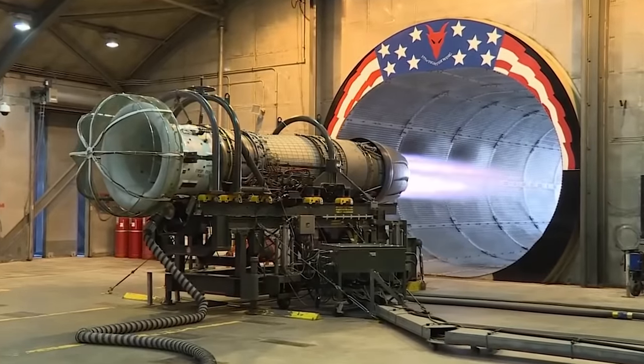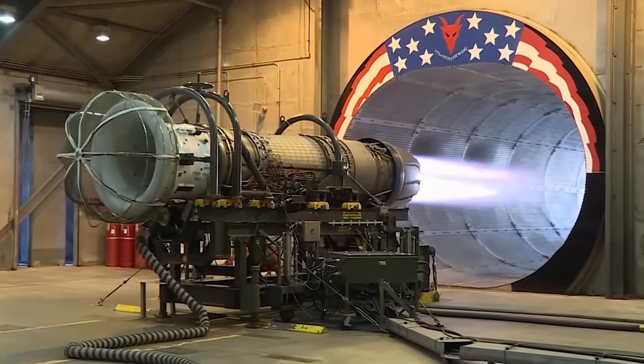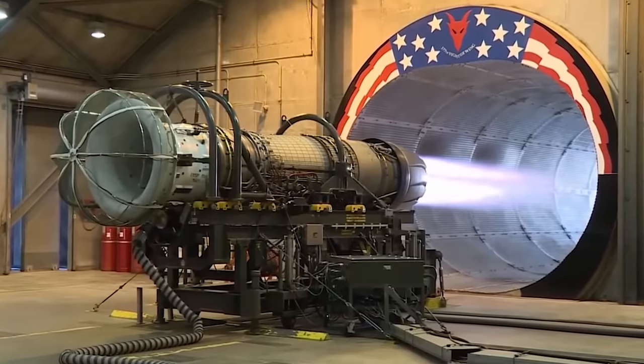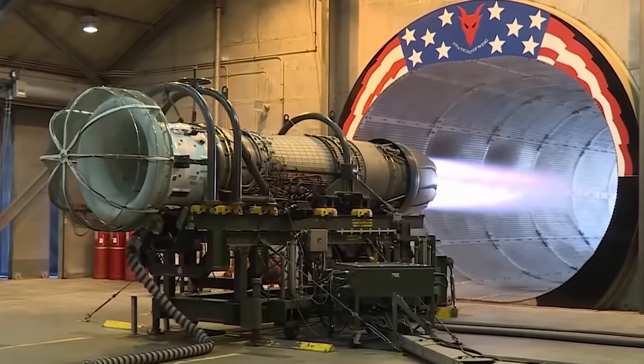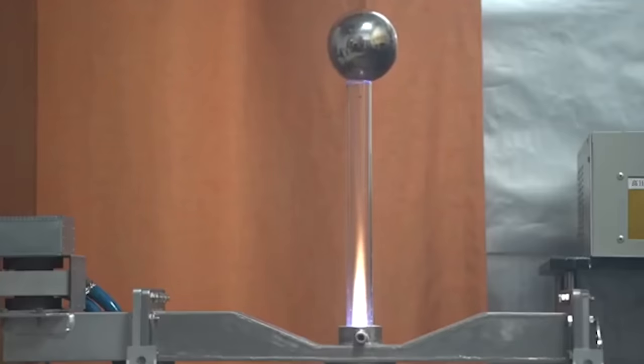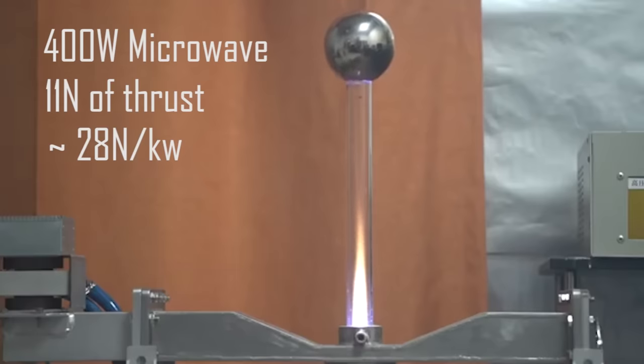The scientists that discovered this found it produces a similar amount of thrust to a combustion jet engine per square meter. However, this is a laboratory-scaled experiment, so it is unlikely to be this effective when scaled up. The scientists found that when running a 400 watt jet engine, they got 11 newtons of thrust, with 4 newtons of that coming purely from the compressed air, which equals around 28 newtons per kilowatt.